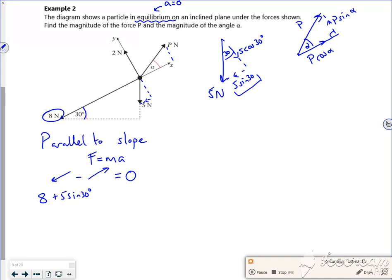Is there anything else going down the slope? So the 8 is, the 5 sine 30 is. So let's see what's going up the slope. So going up the slope is this part here, this component here, which is a P cos alpha. And that's equal to zero. So I can work out then, if I do a little bit of rearranging, my P cos alpha is 5 sine 30 plus 8.